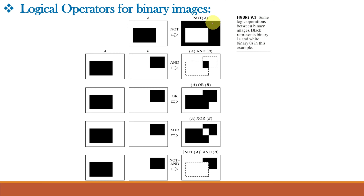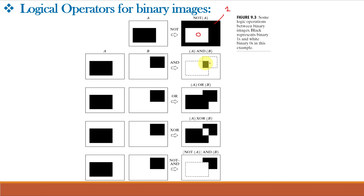In this figure, black represents 1 and white represents binary 0. This is A. NOT of A — the complement of A — will have all white become black and all black become white. This is A and this is B. A AND B gives the elements which are present in A as well as in B — these elements are 1 and all others are 0.